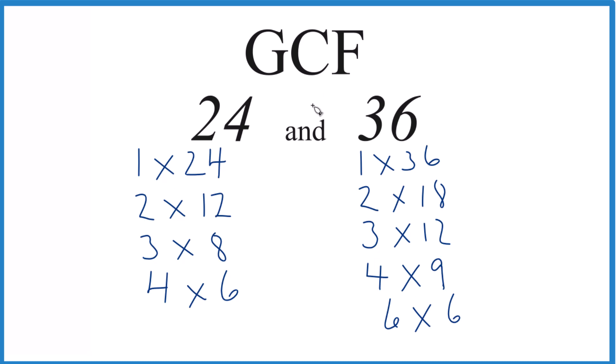We want to look at the common factors and then choose the greatest one. 1 goes into 24 and 36, 2, 3, 4 goes into 24 and 36 evenly, and then 6. The greatest one though, the greatest common factor, is going to be 12 because 12 goes into 24 and 36.